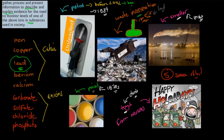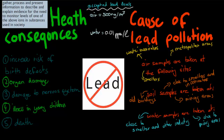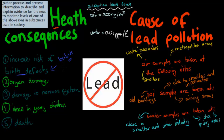Why do we need to talk about lead? The dot point says: describe and explain evidence for the need to monitor levels of one of the above ions in substances used in society. Some of the evidence is the health consequences. If you consume lead at a higher level, you can have an increased risk of birth defects and miscarriages — meaning your babies might have deformities, or you could have a miscarriage, where your baby is stillborn.